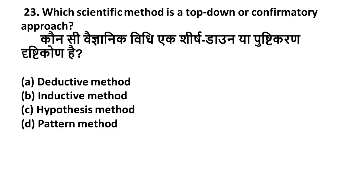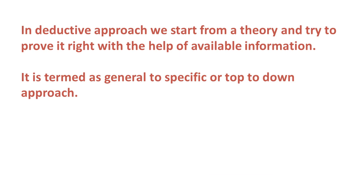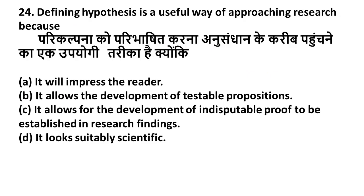Question 23: Which scientific method is a top-down or confirmatory approach? Option A: Deductive method, Option B: Inductive method, Option C: Hypothesis method, Option D: Pattern method. The right answer is Option A — deductive method. In the deductive approach, we start from a theory and try to prove it is right with available information. It is termed as general-to-specific or top-to-down approach.